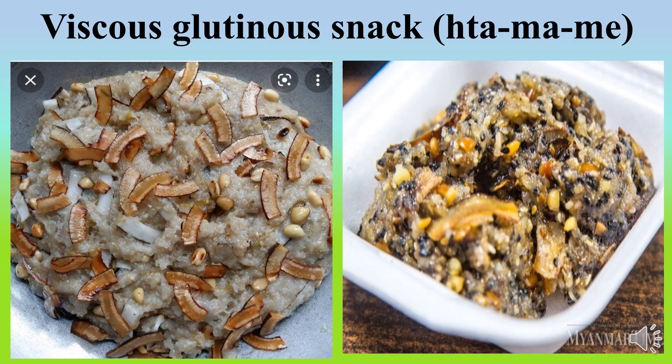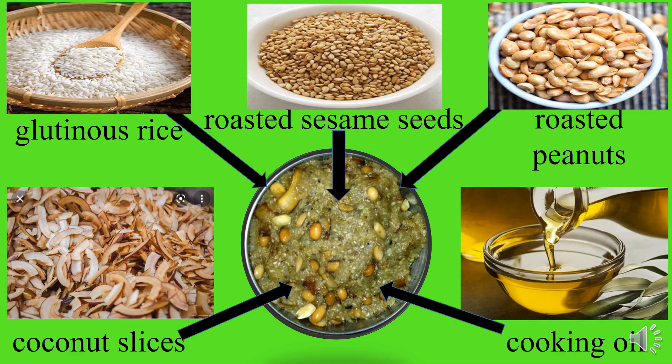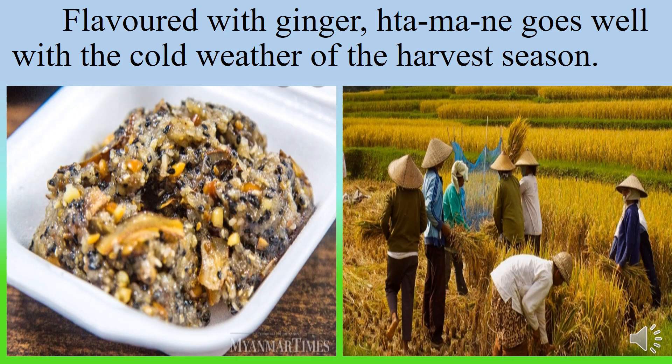Thamane is a viscous glutinous snack. The ingredients for Thamane are glutinous rice, roasted sesame seeds, roasted peanuts, coconut slices, and ginger. Thamane goes well with the cool weather of the harvest season.